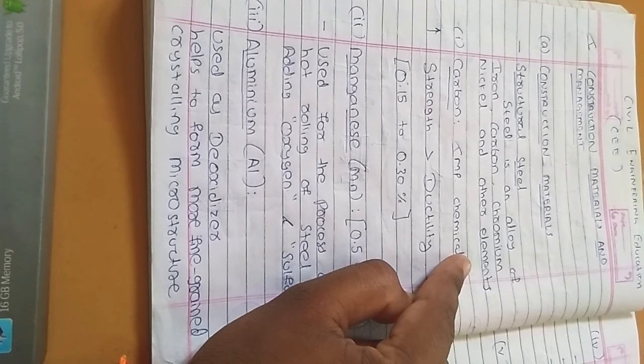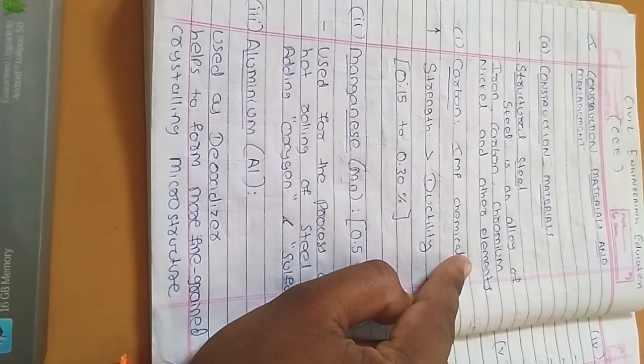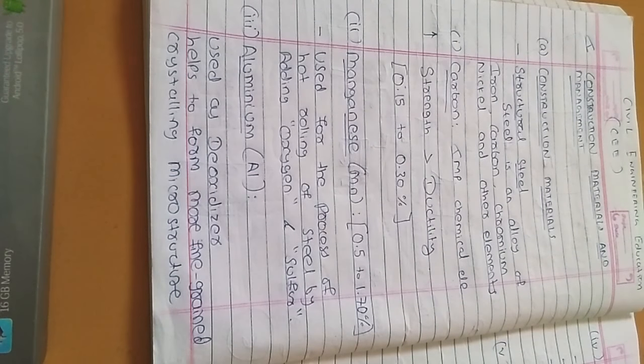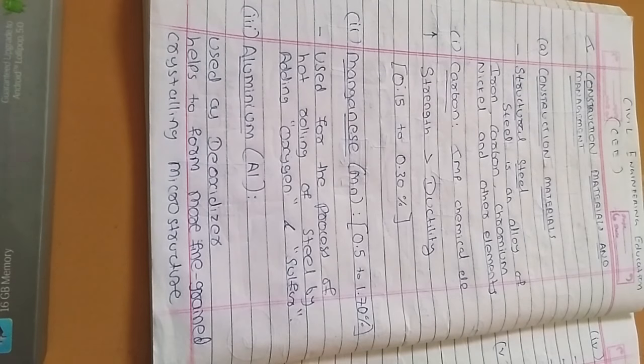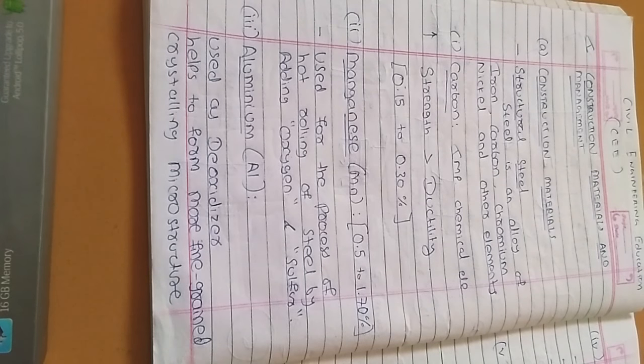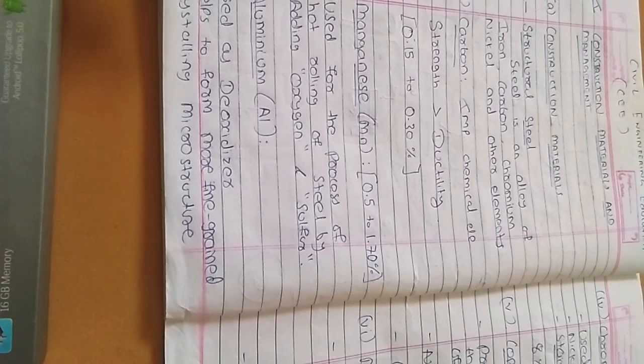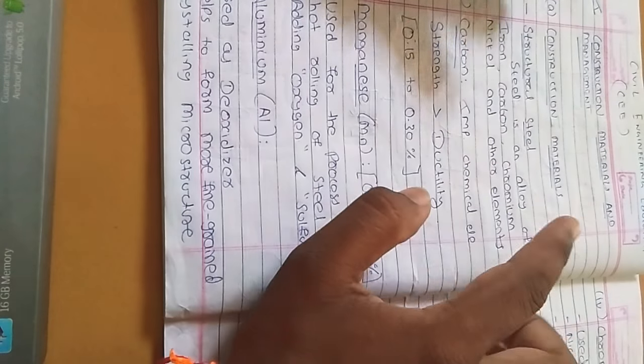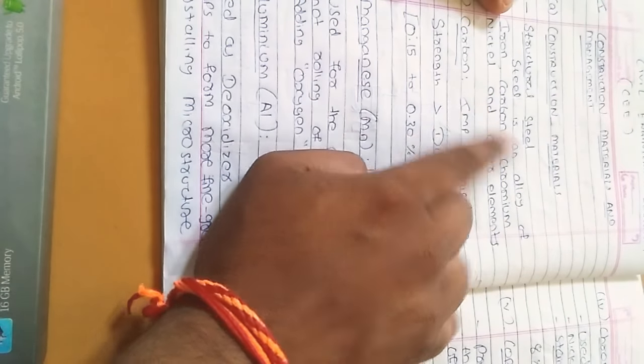If you use steel for some big structure, some contents will be more and less contents will be more depending on where they are used to be placed. If the water area is more, more chromium will be used. So let's begin. Steel structure is made of iron, carbon, chromium, and other elements according to their uses as I explained before.